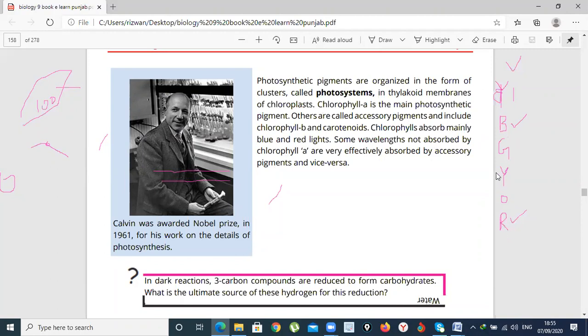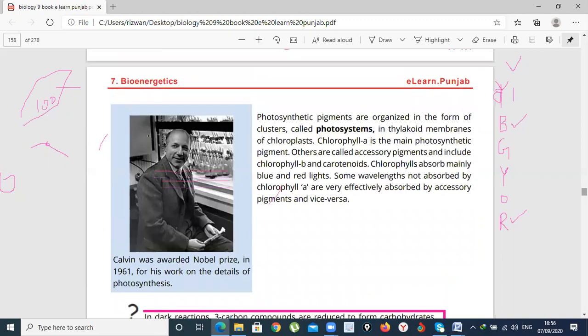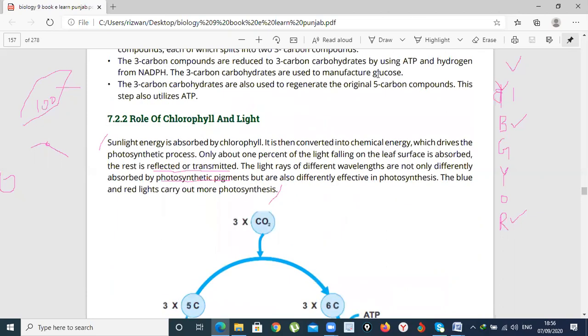Chlorophyll A absorbs blue and red light, so the rest of the wavelengths, who will absorb? Chlorophyll B or carotenoids. Chlorophyll is a pigment that absorbs light, after which photosynthesis can proceed. Chlorophyll A is the main pigment, whereas chlorophyll B and carotenoids are accessory pigments. The work that chlorophyll A does, B and carotenoids do not do. The light that chlorophyll A absorbs, B and others do not absorb. This was our small topic whose name was role of chlorophyll and light.